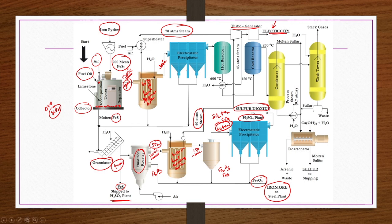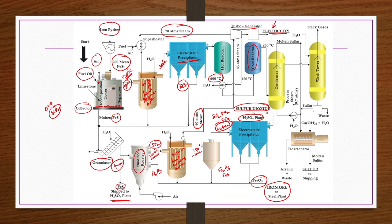Cooled gases at 300°C are sent to an electrostatic precipitator to remove any Fe2O3 droplets or dust. These droplets or dust of Fe2O3 are mixed with the molten sulphur, and granulation is carried out. The cooled gases at 300°C are then sent to the hot stage catalytic reactor where catalytic reactions occur at 600°C, where SO2 reacts with COS and CS2 to yield S6 and carbon dioxide.